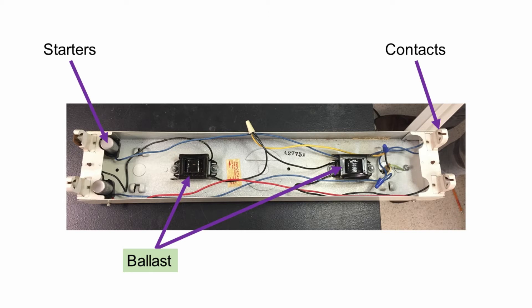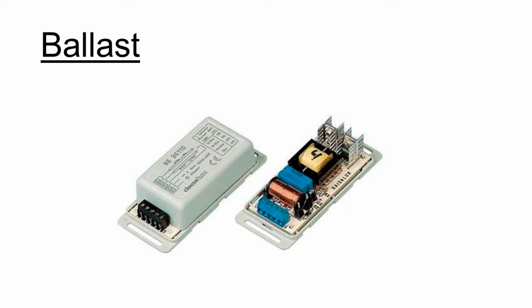The ballast is a transformer that regulates the current running through the light. They can last as long as 20 years, but bad bulbs and cold temperatures can decrease their lifespan.